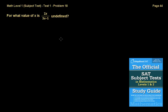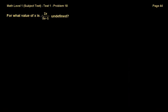Welcome back, everybody. We're now in problem 18. The question is: for what value of x is 2x over 3x minus 1 undefined? What do we know about fractions? A fraction is undefined when the denominator is equal to 0, because you can't have division by 0.